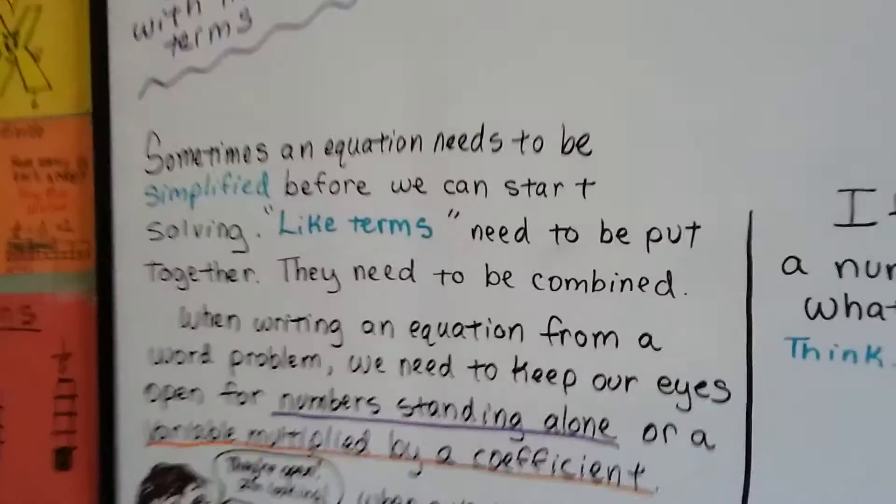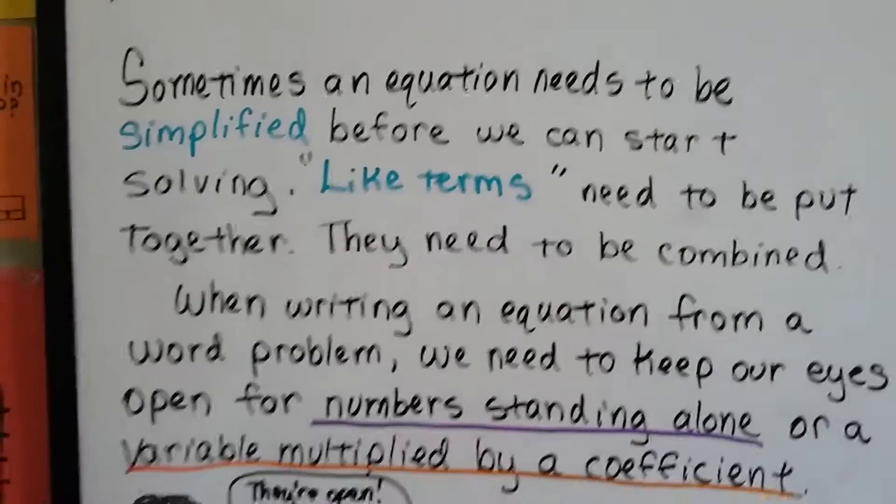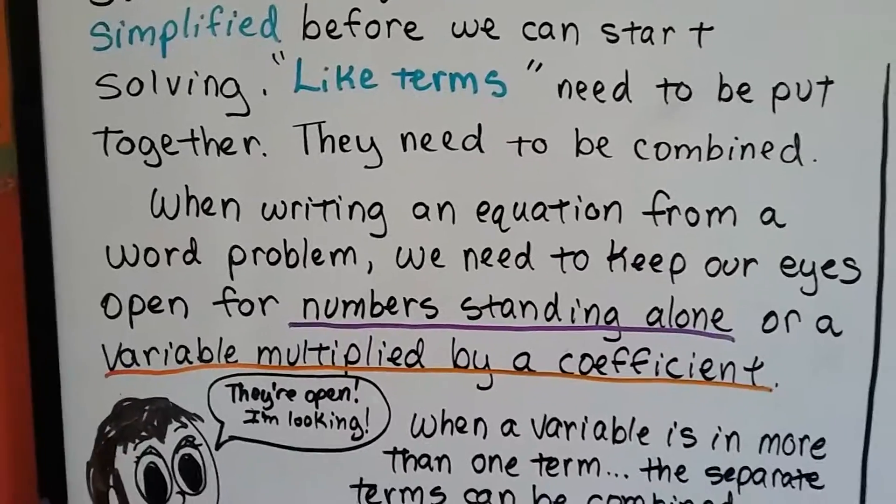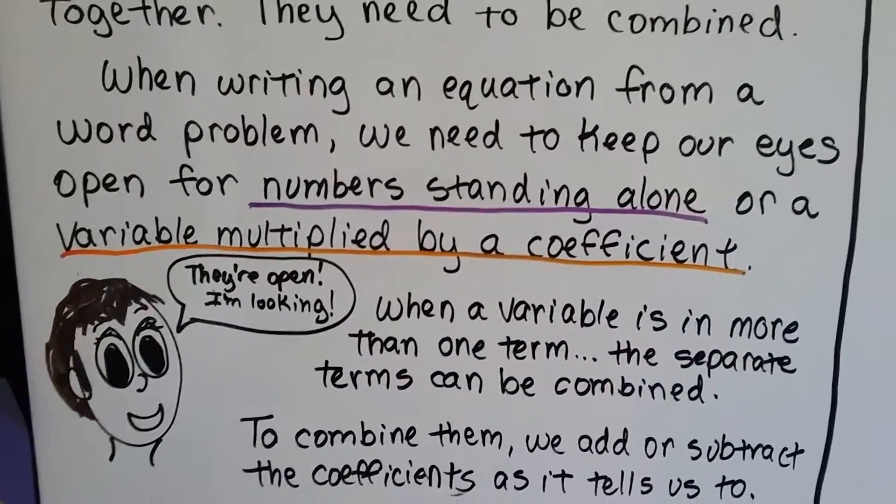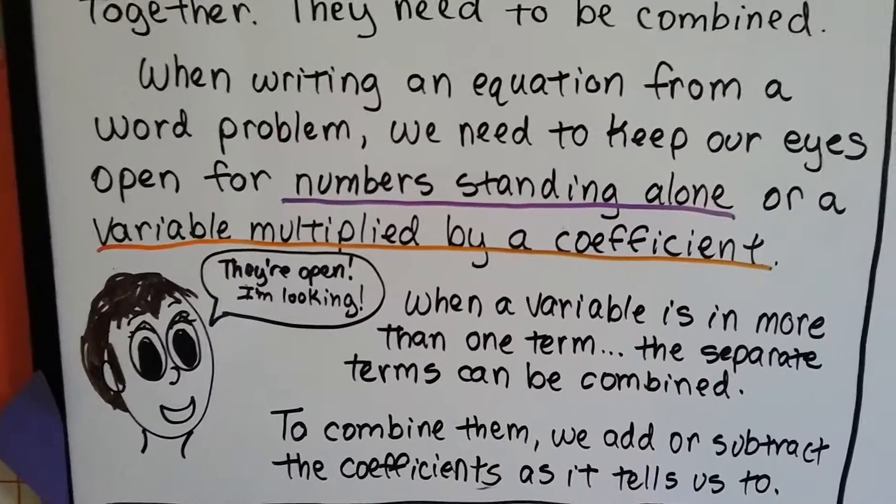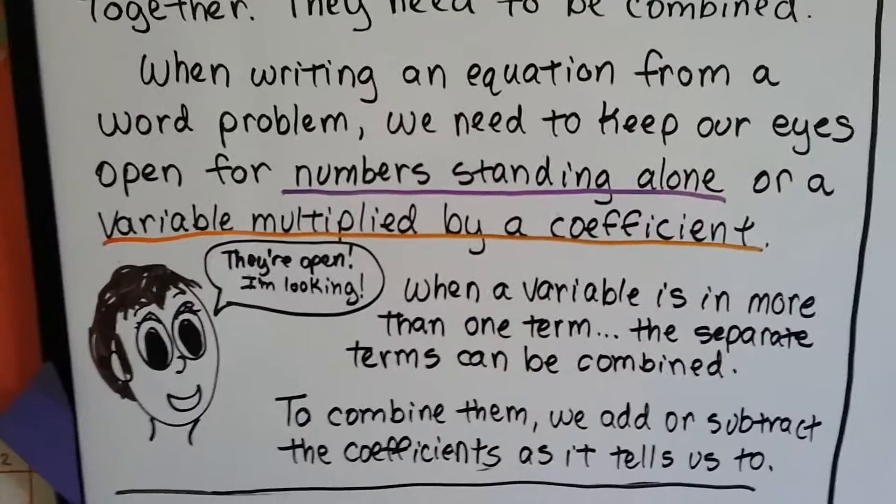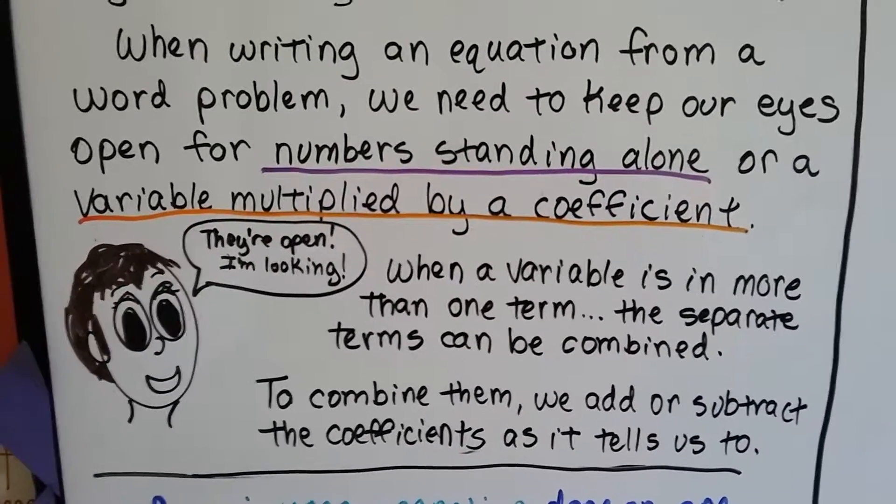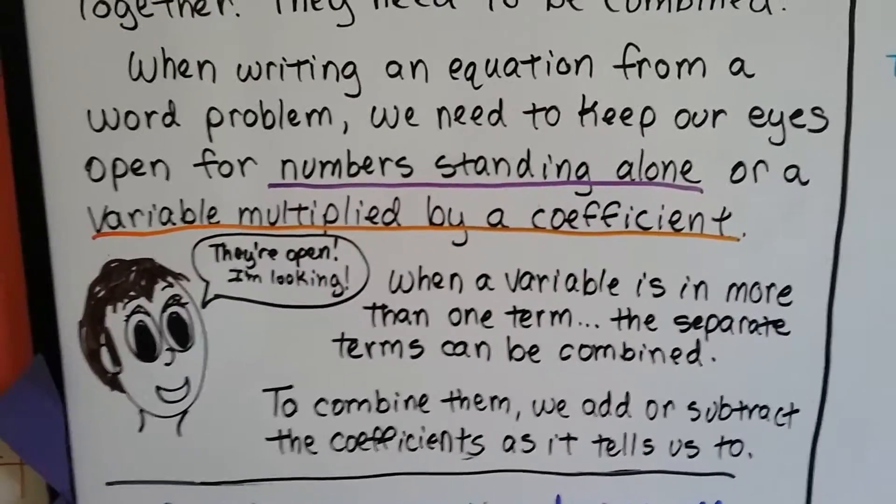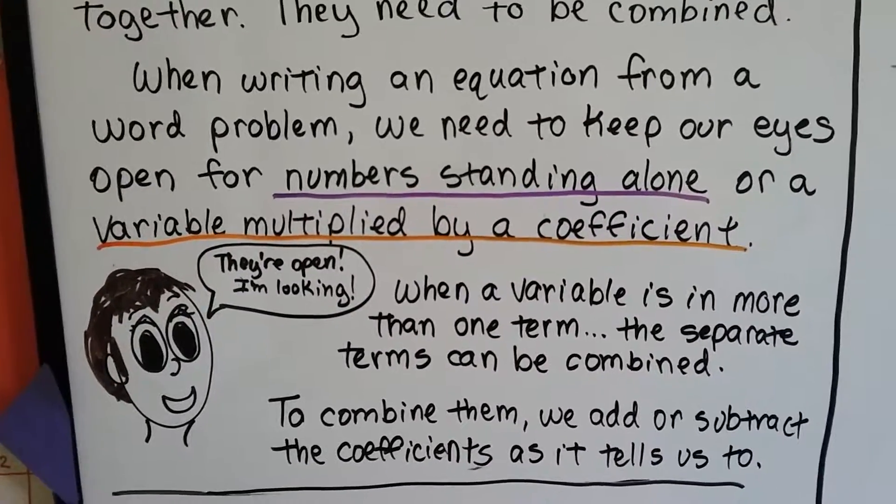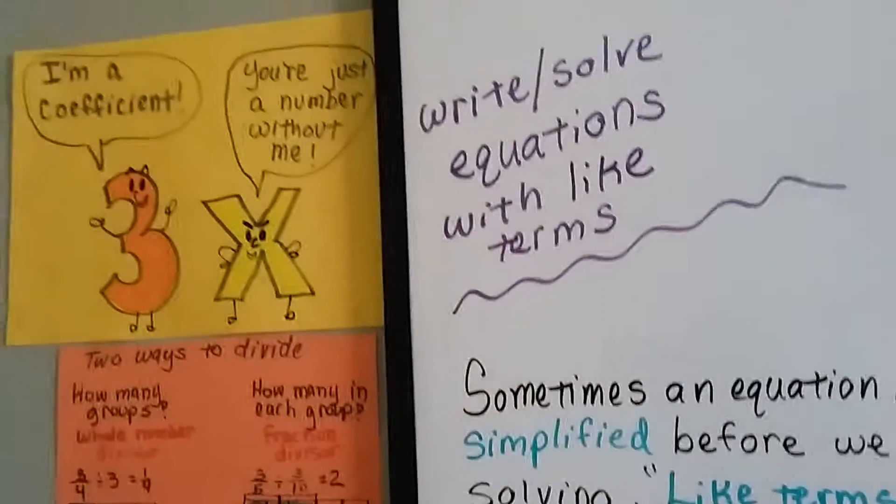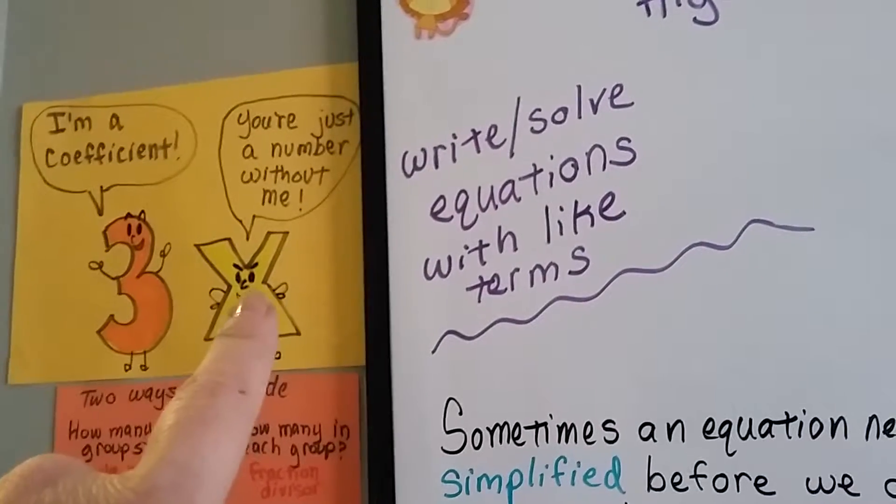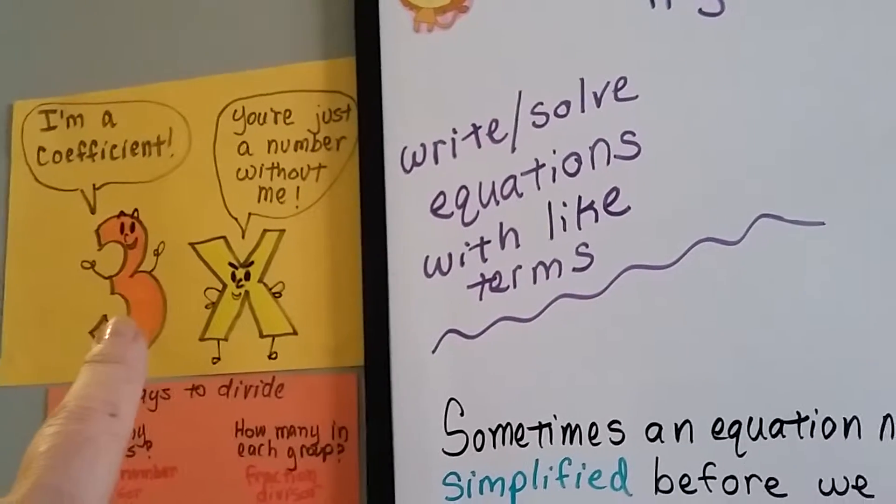Sometimes an equation needs to be simplified before we can start solving. Like terms need to be combined. When writing an equation from a word problem, we need to keep our eyes open for numbers standing alone or a variable multiplied by a coefficient. When a variable is in more than one term, the separate terms can be combined by adding or subtracting the coefficients. Remember, a coefficient is a number that's in front of a variable. If that variable leaves, then he's just a stand-alone number.